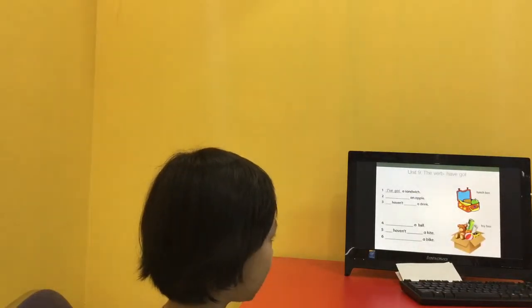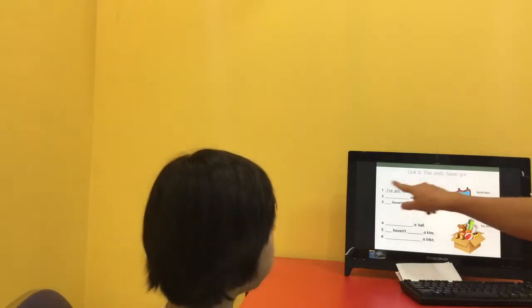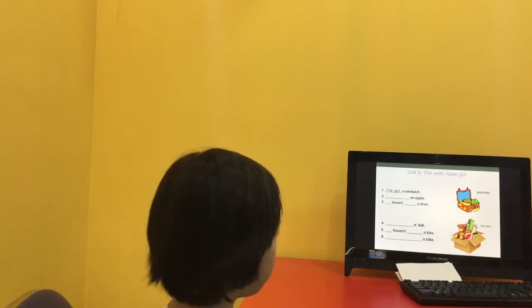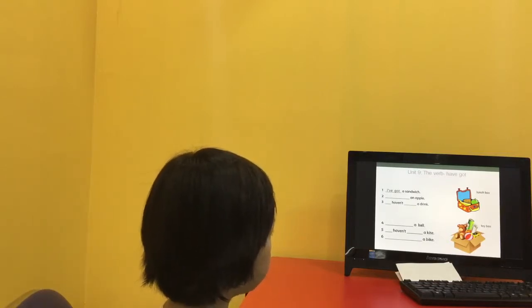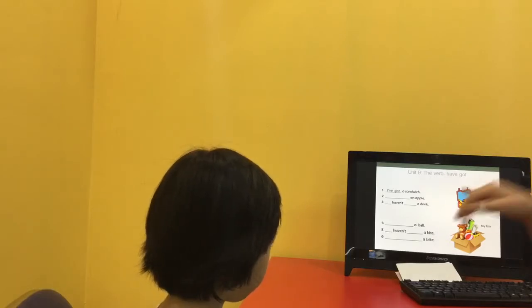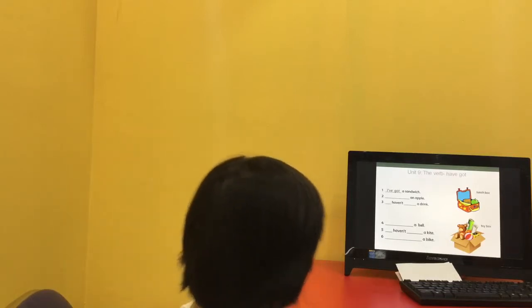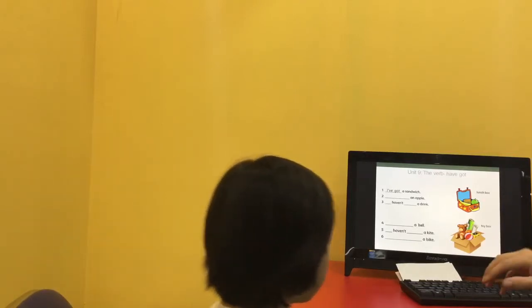Tell me, what is in your lunch box? What have you got? I've got a sandwich. I've got an apple. I haven't got a ring. Well done. And what have you got in your toy box? I've got a ball. I haven't got a ring. Well done.